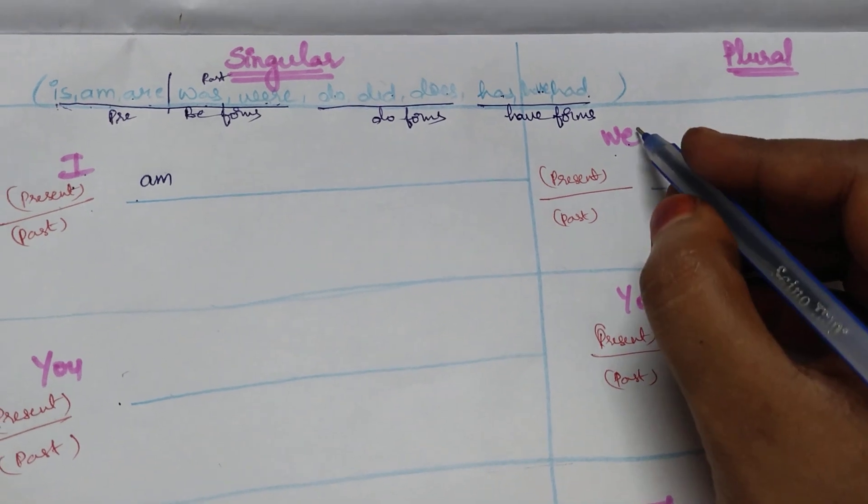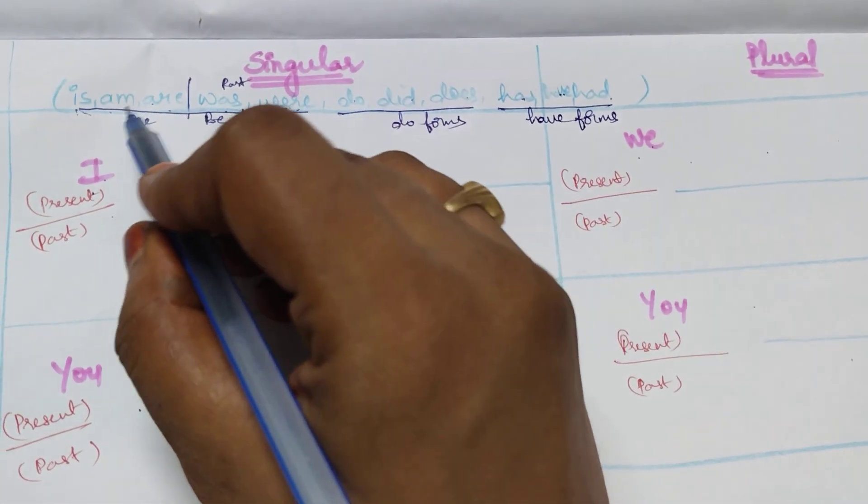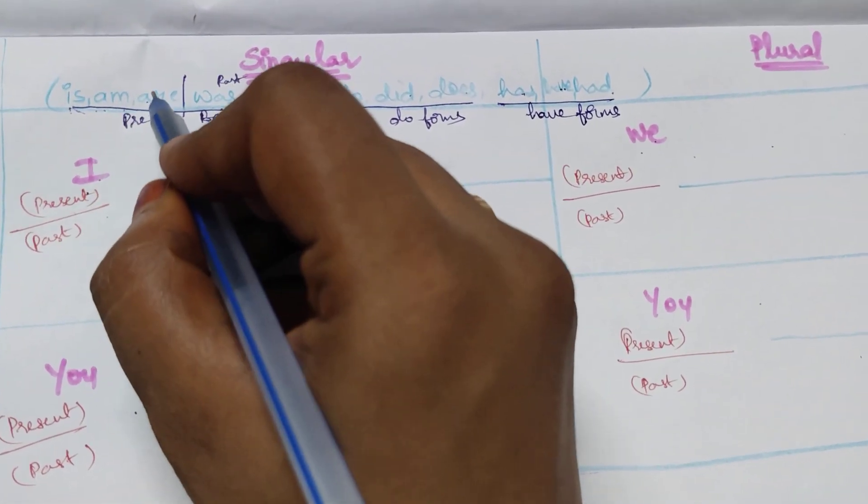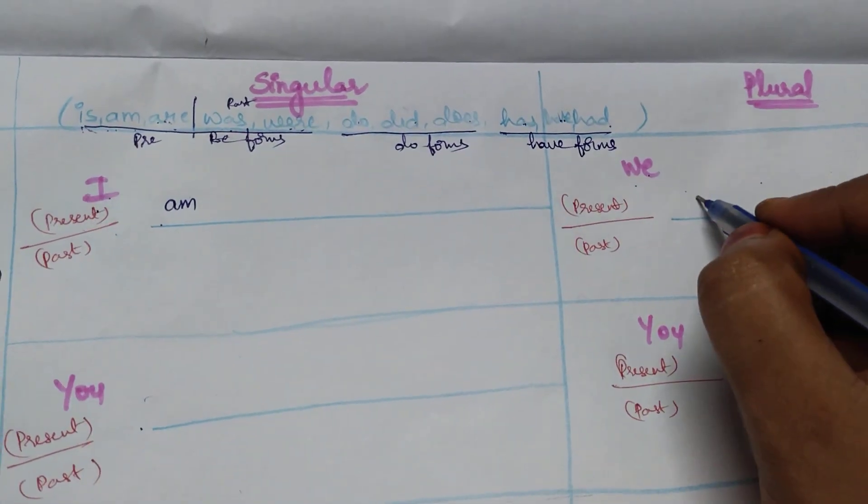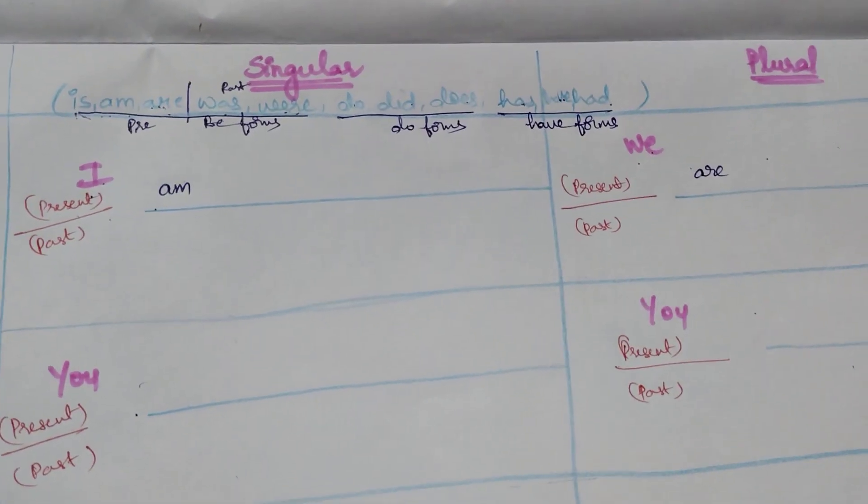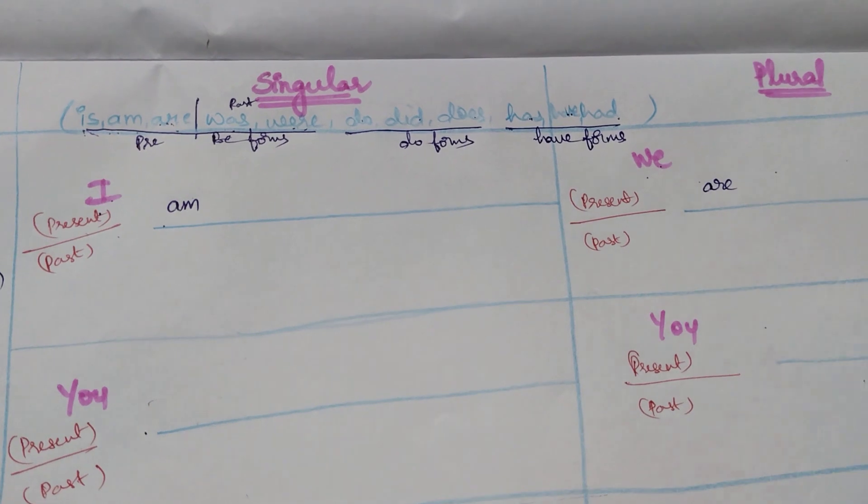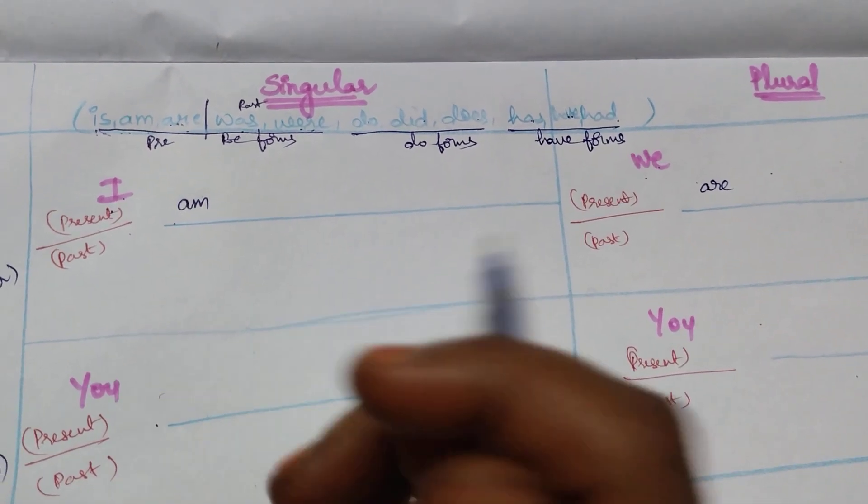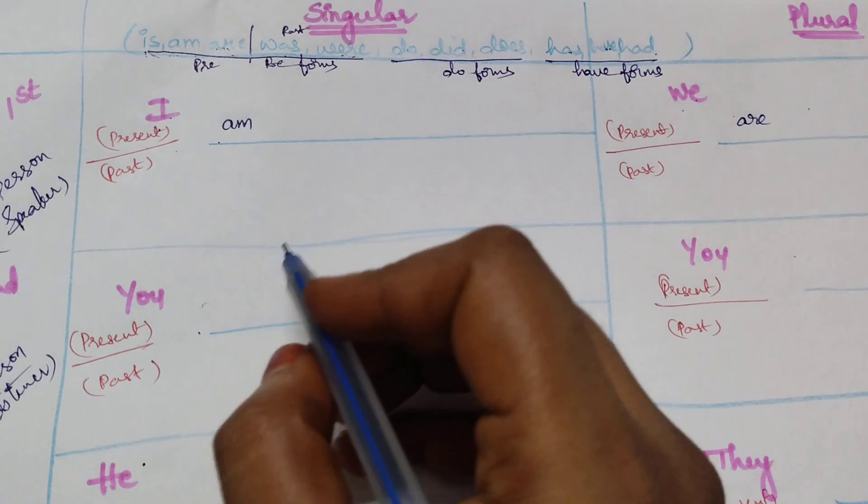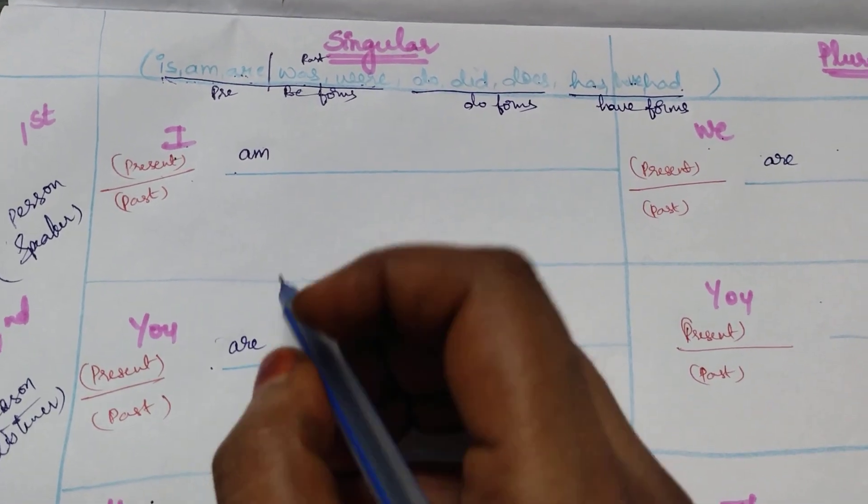Now when we is the subject, what should I take in present? Are. Because it is plural. We are. Now you are. You should not think about was or were because we are talking about present.